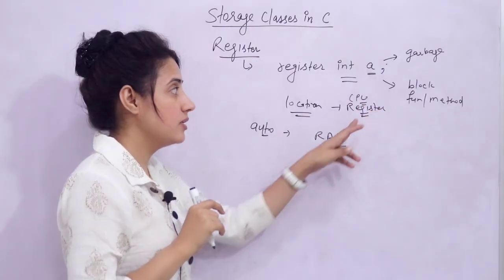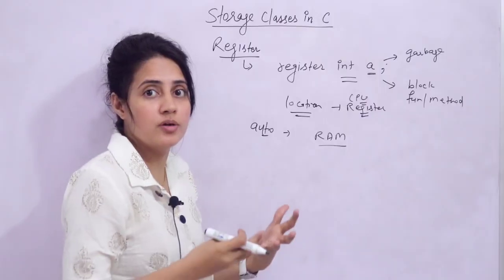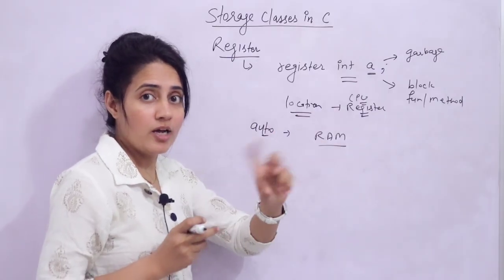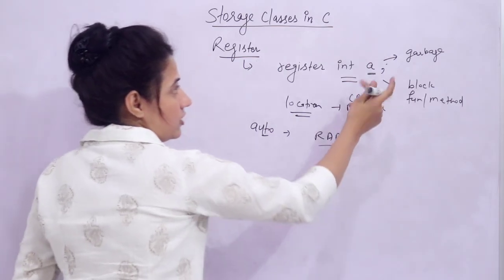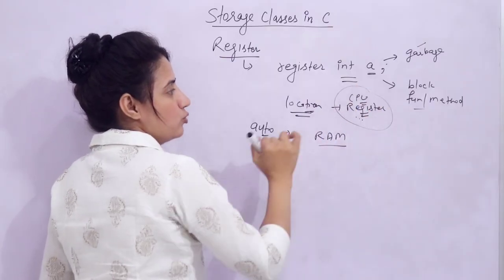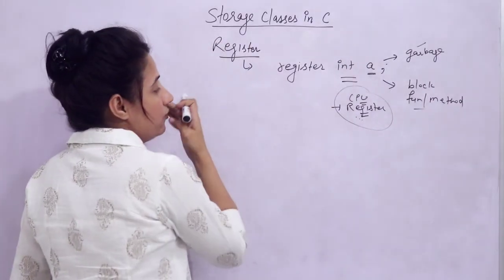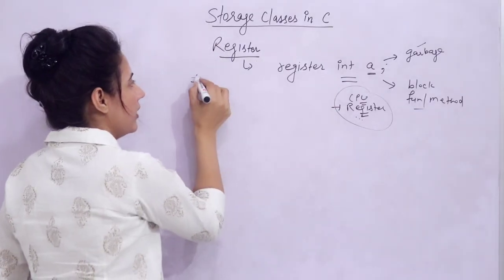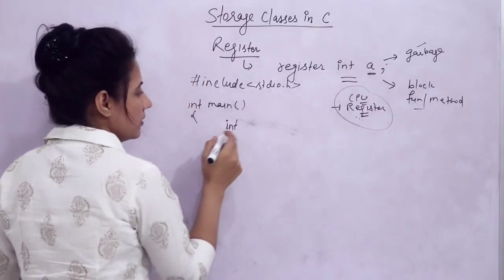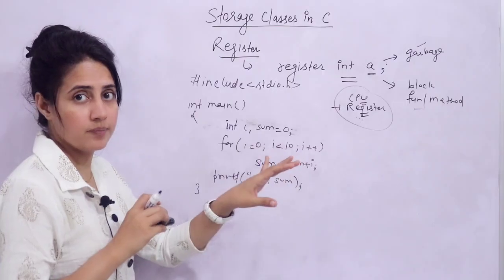Now, why do we store variables in CPU registers, and which type of variable should we use register with? These questions will be answered one by one. For our example program, I want to sum numbers 0 to 9. Here the variables i and sum are declared as auto by default, since if you don't write any keyword, the variable is auto.